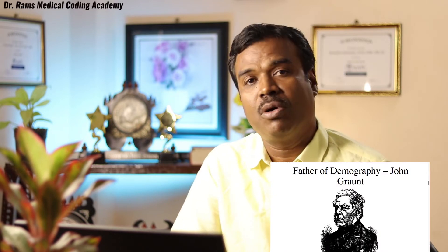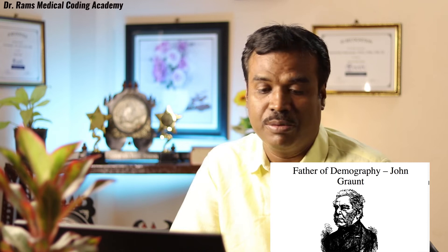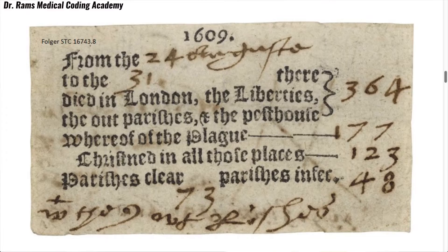John Graunt is called the father of demography for having recorded the first ever system. This bill is from 1609. It records the types of diseases and the number of people infected or affected. For example, 177 persons died because of plague, which was rampant at that time.